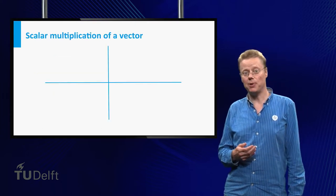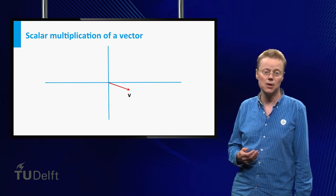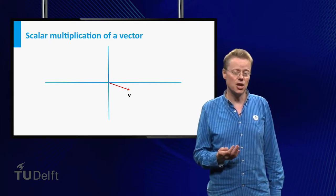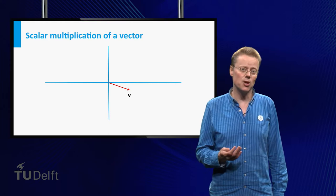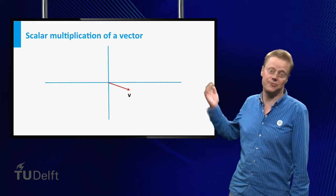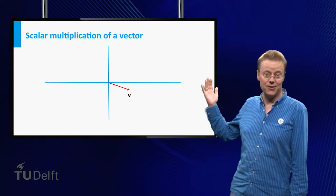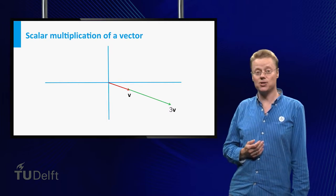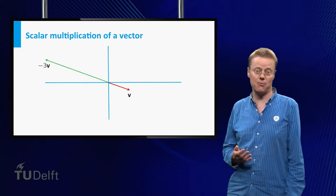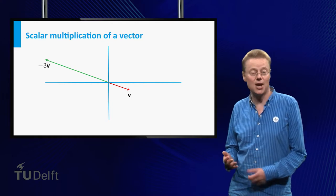Vectors can also be multiplied by a number, often called a scalar in this context. Briefly, multiplying a vector by 3 means that its direction is left unchanged and its length is multiplied by 3. For instance, consider this vector v — three times v is given by this. Multiplying v by minus 3, on the other hand, will give a vector which has the opposite direction to v, and its length is still 3 times that of v.